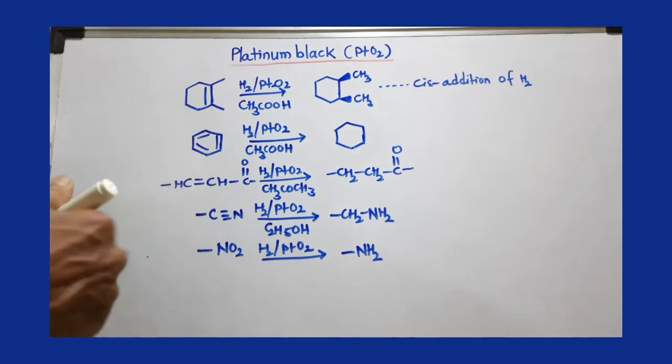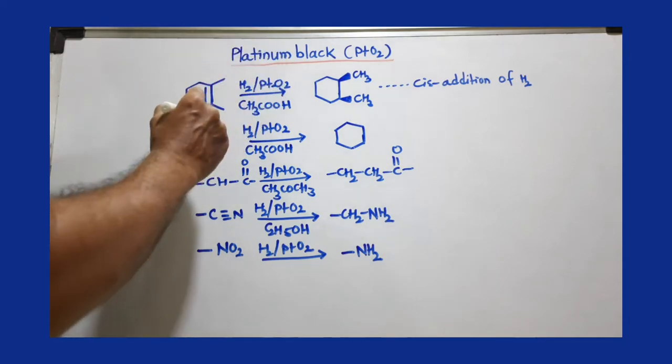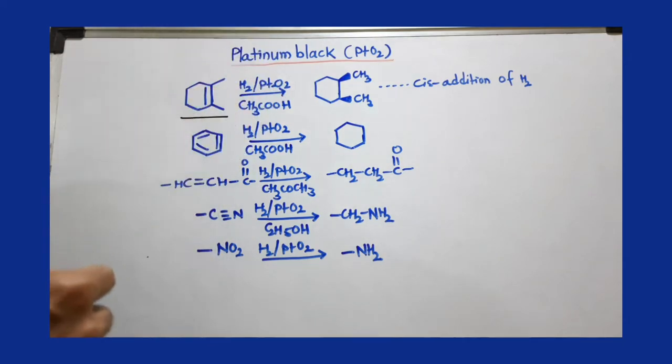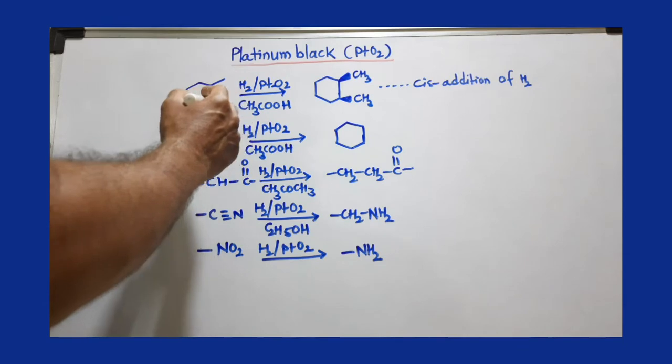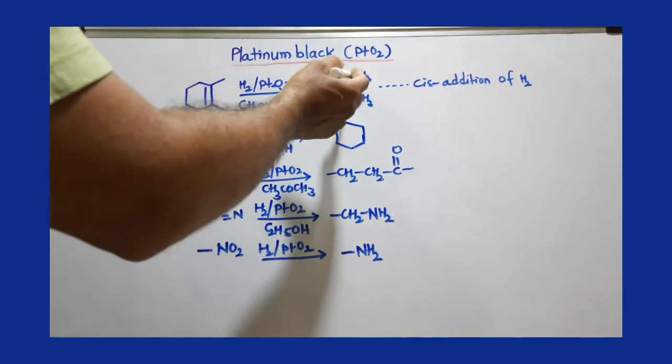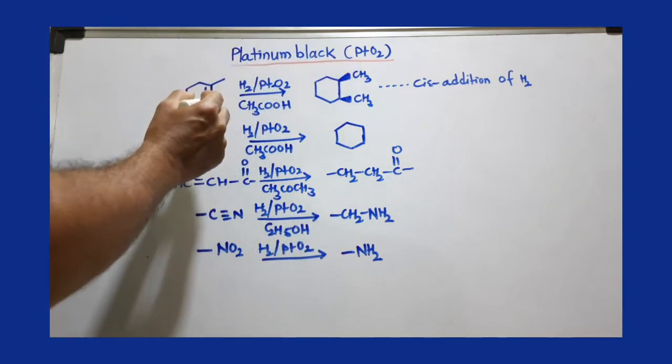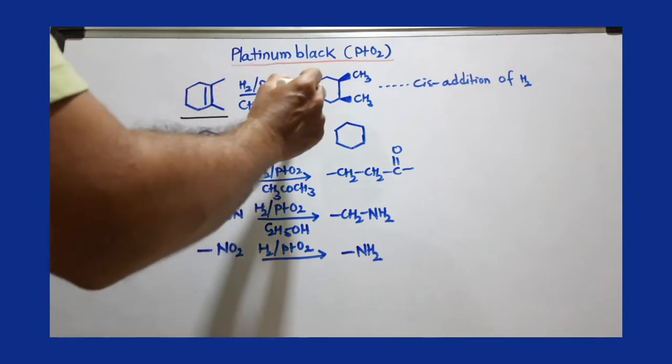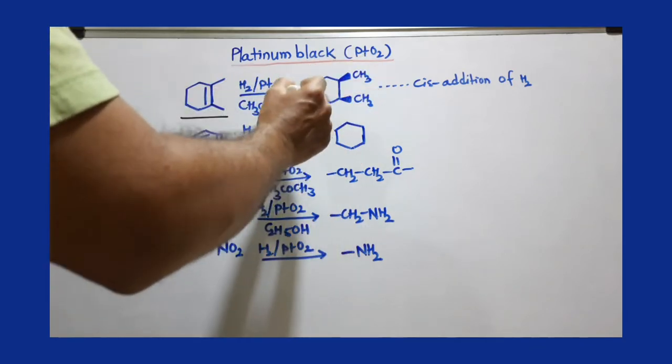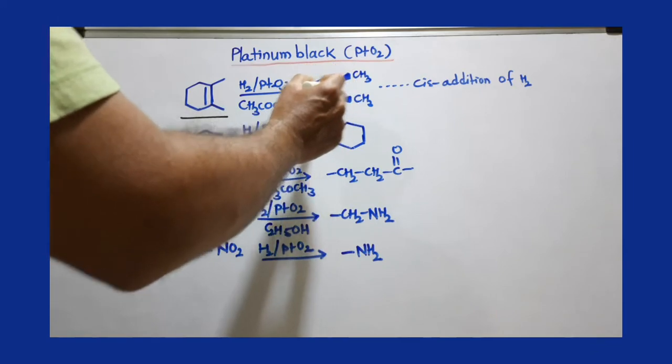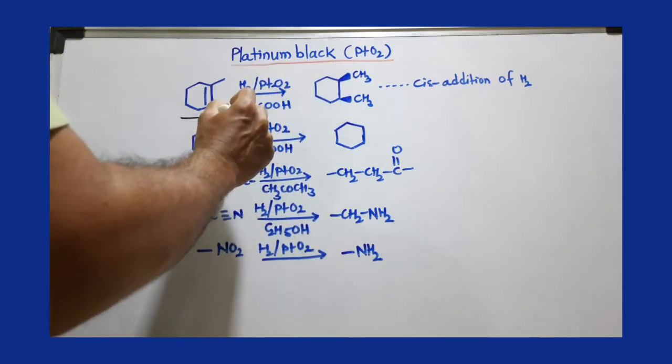We can add hydrogen to an olefinic double bond - this carbon-carbon double bond can be reduced to a single bond. You add one hydrogen here and one hydrogen here to get this compound, meaning the double bond is gone, by using H2/PtO2 in presence of acetic acid as a solvent.